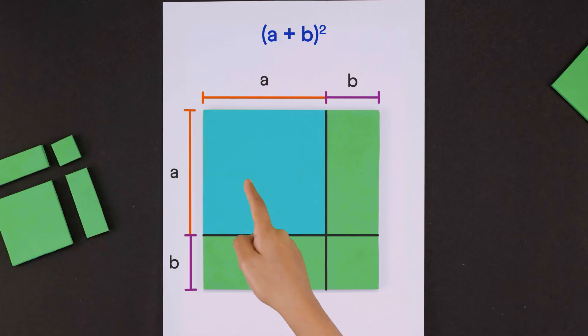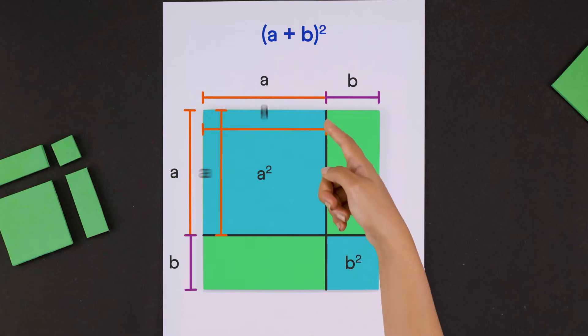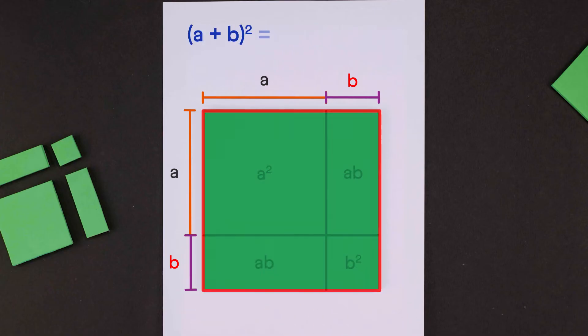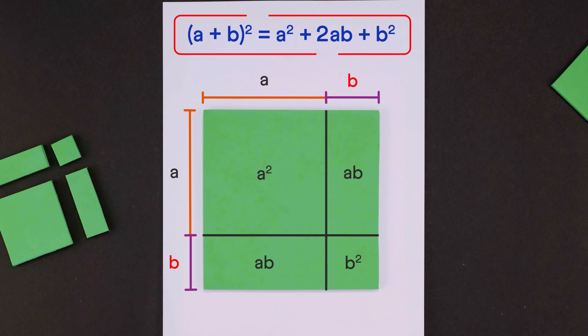We get this square with side a, so its area is a squared, and this smaller square with side b, so its area is b squared. What about these two rectangles? They have sides a and b, so their areas are a times b. So the area of this whole square is a squared plus 2ab plus b squared.